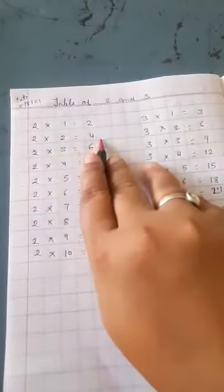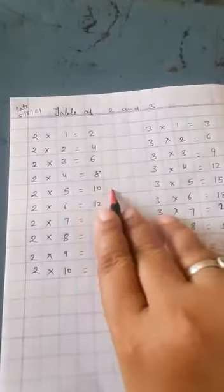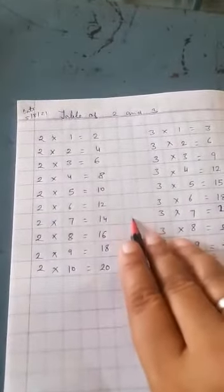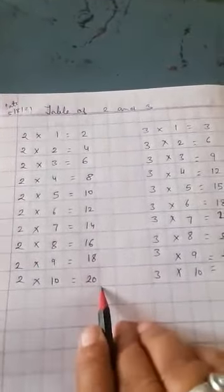2 twos are 4, 2 threes are 6, 2 fours are 8, 2 fives are 10, 2 sixes are 12, 2 sevens are 14, 2 eights are 16, 2 nines are 18, 2 tens are 20.